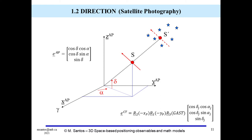Determination of directions from satellite photography is one of the earliest methods of satellite geodesy. Directions to a satellite are obtained by photographing the satellite against a background of known stars, whose directions, given by the Right Ascension and Declination, are contained in star catalogs. Since star catalogs are based in an inertial frame — the Right Ascension system — the optical tracking of satellites establishes the direction in that inertial frame.